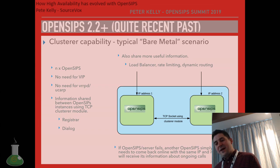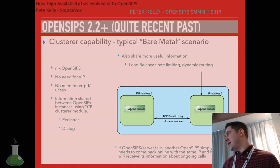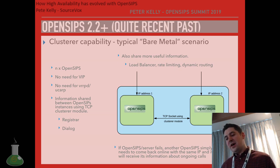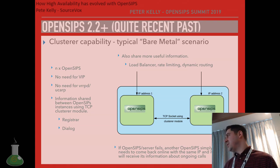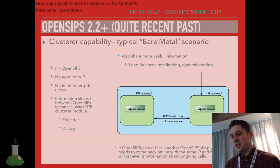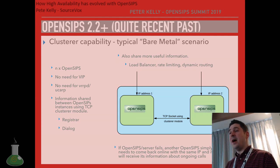Once you've enabled the clusterer module, you can add things on top of it — for example, registrar or user location information shared between OpenSIPs boxes, the same with the dialogue module, load balancer, rate limiting, dynamic routing. There are lots of modules that can now share information between N OpenSIPs instances just by using this cluster module. We've very quickly gone away from manual configuration scripts to a nice cluster module that can just say: add as many nodes as you want and share all the information between them. This works really well especially in a bare metal scenario.